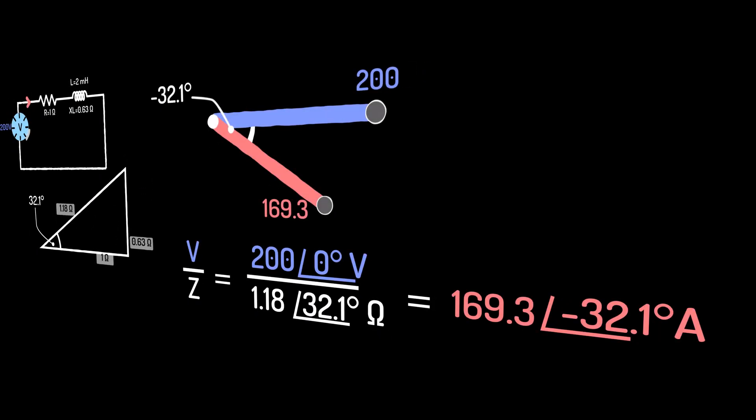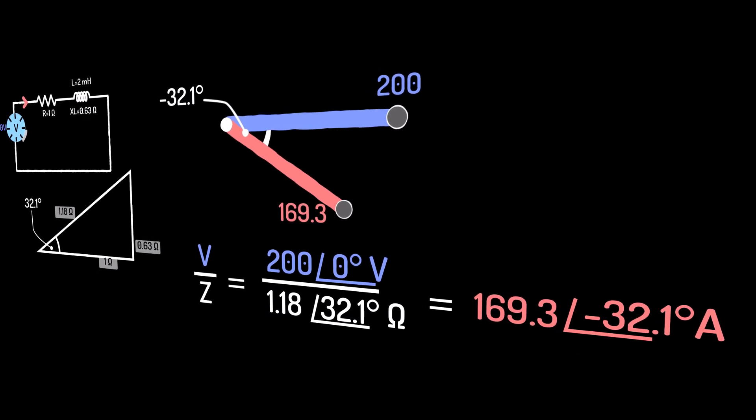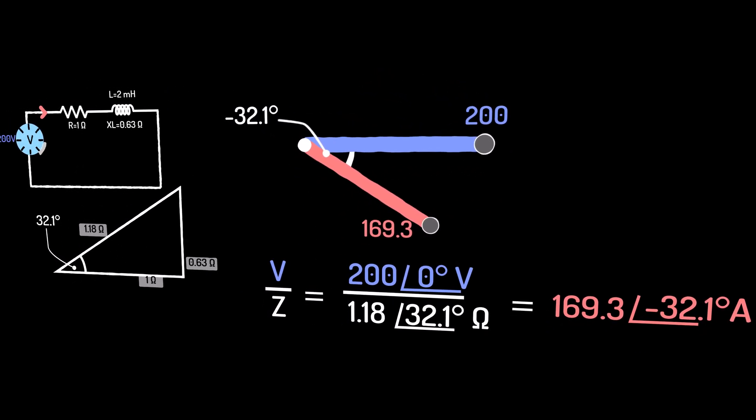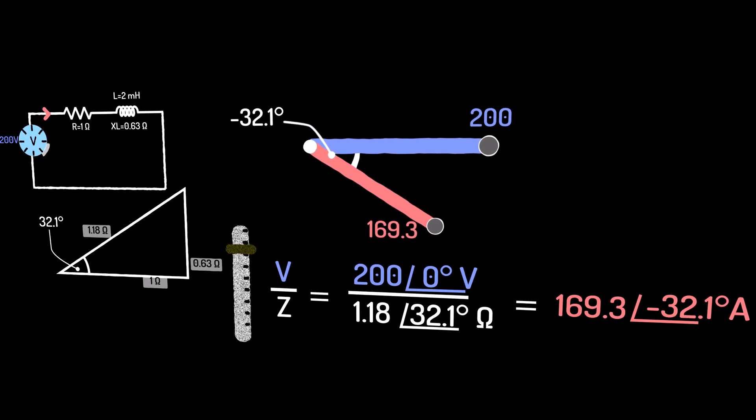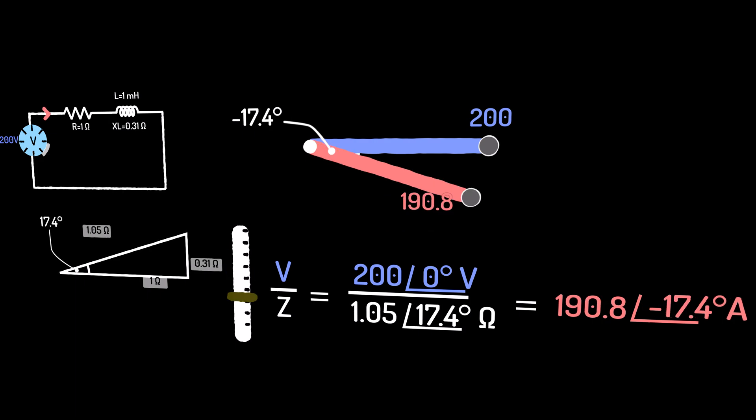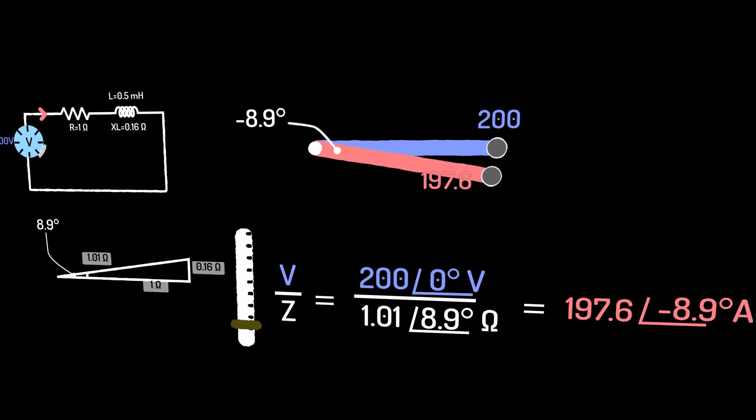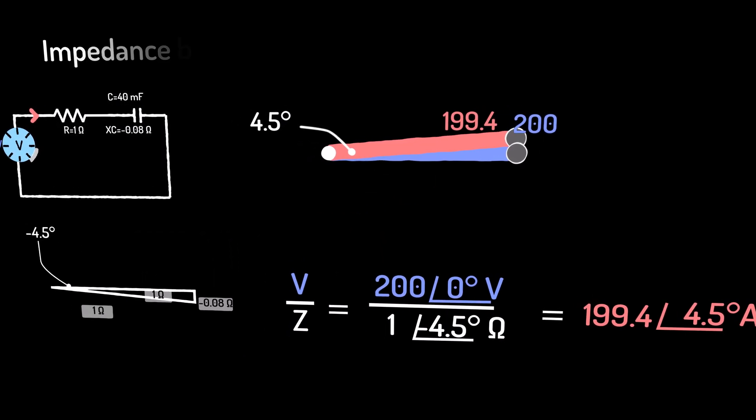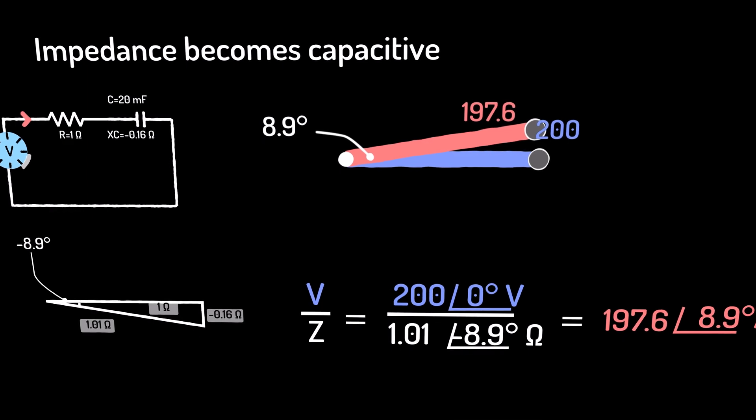So system impedance can be treated as the relationship between the voltage and current phasors. And even when the impedance becomes net-capacitive, this approach continues to work, except now the power factor angle begins to lead, and the impedance angle goes negative.